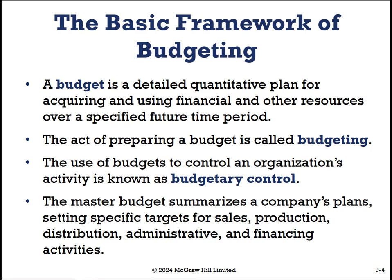The master budget summarizes a company's plan and sets specific targets for sales, production, distribution, administration, and financing activities. We look at the entire financial statements and project out to make sure we're going to have the resources we need — raw materials to produce what we need to sell, required inventory on hand if we're a merchandising company, and how our cash management is doing.